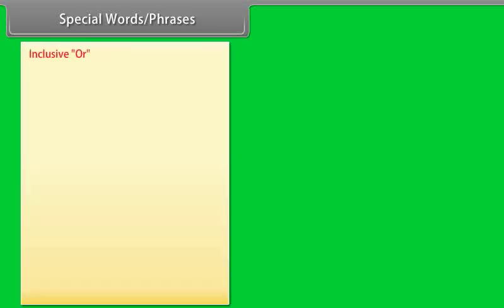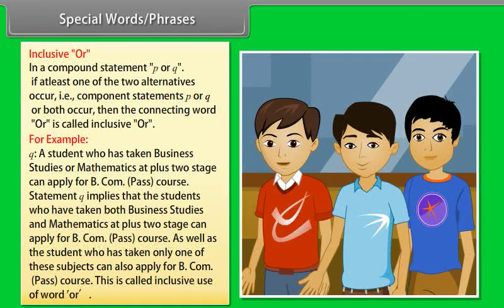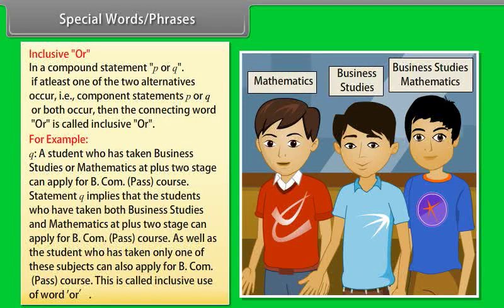Inclusive OR: In a compound statement P or Q, if at least one of the two alternatives occurs (that is, P or Q or both), then the connecting word OR is called inclusive OR. For example, Q: 'A student who has taken business studies or mathematics at the +2 stage can apply for BCom pass course.' This implies that students who have taken both subjects, or only one, can apply. This is called inclusive use of the word OR.